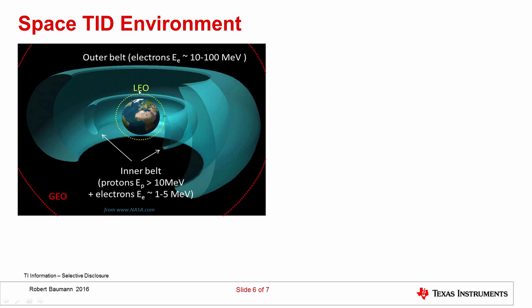A low Earth orbit will be better shielded than a geosynchronous orbit. I'll go into more detail about environment and different orbits in a later lecture, but you need to be aware that depending on the satellite mission, it may have a different orbit, and the radiation dose it receives — and hence the total ionizing dose effect you will see — is very dependent on orbit.